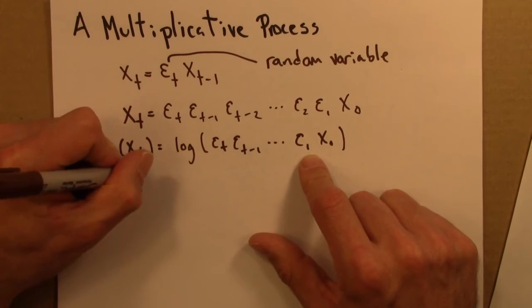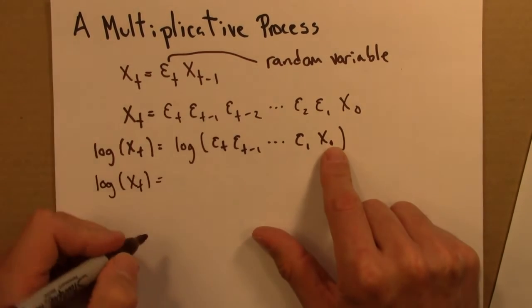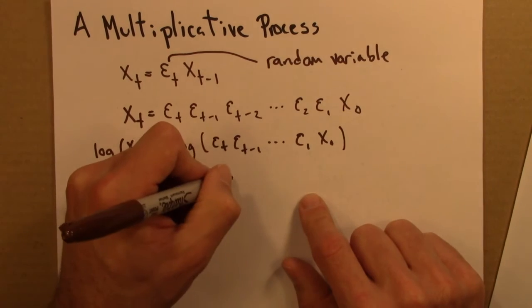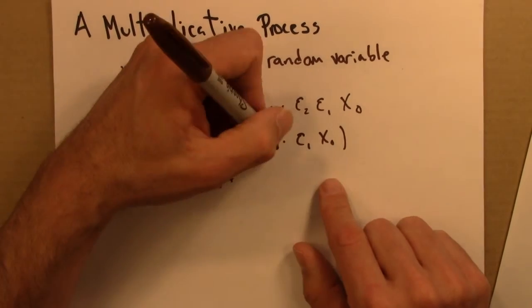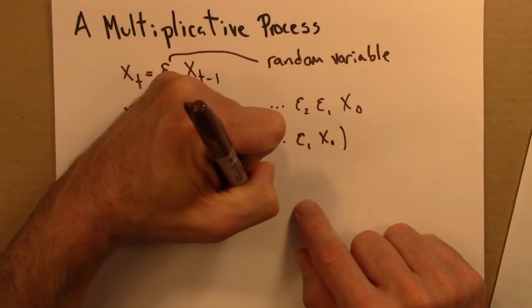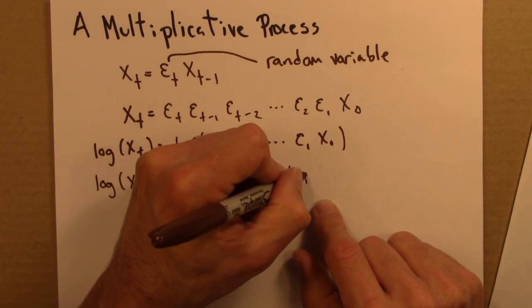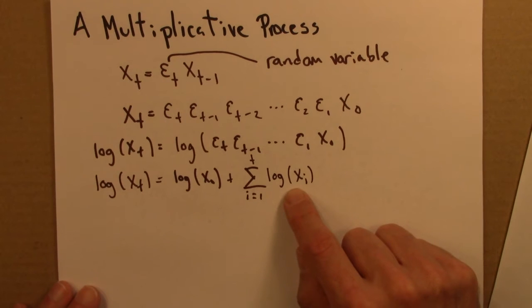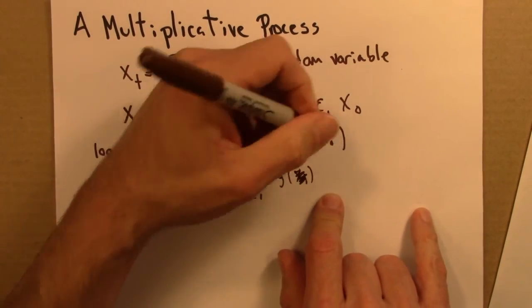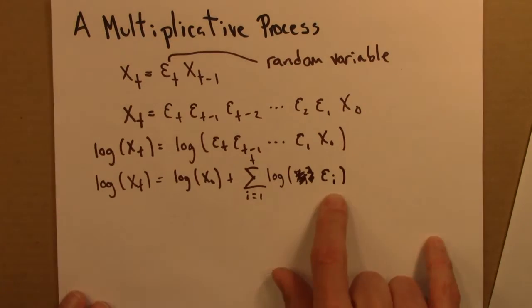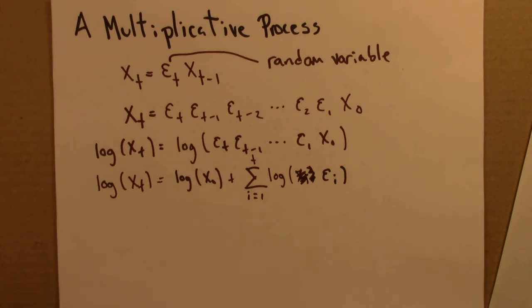Log xt. First I'll deal with this x0 term. And then I've got all of these epsilon terms. And I start at 1 and I go up to t. And I'm taking the logs of them. So I take the log of epsilon 1 plus the log of epsilon 2, and so on. Add all those logs together.